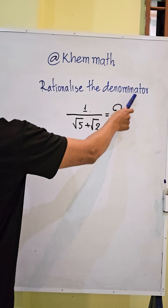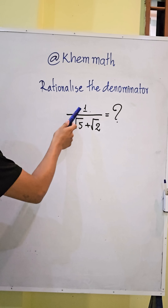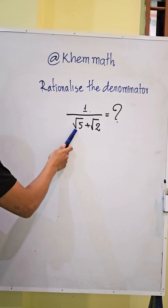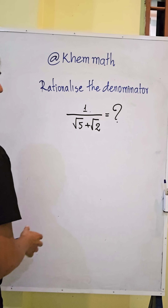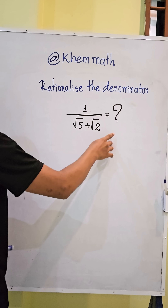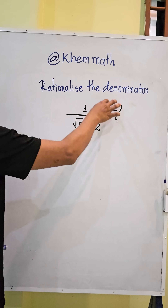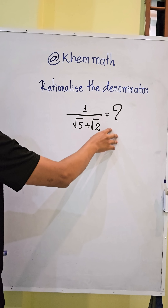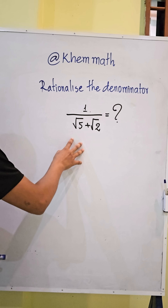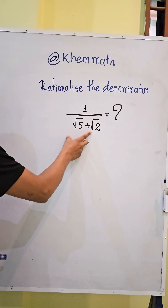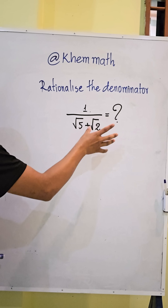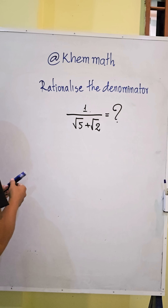Where is the denominator? 1 divided by square root of 5 plus square root of 2. The first step is to multiply both the numerator and denominator by the conjugate, changing square root of 5 plus square root of 2 to square root of 5 minus square root of 2.